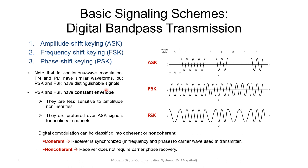When it comes to demodulation, we can classify digital demodulation as coherent or non-coherent. In coherent demodulation, the receiver requires a copy of the transmitted carrier — it is synchronized in frequency and phase to the carrier at the transmitter, so you need to recover the carrier before demodulating. In non-coherent demodulation, the receiver does not require carrier phase recovery. This is less complex, but performance is better with coherent.